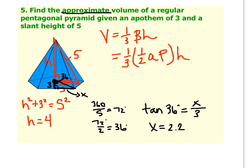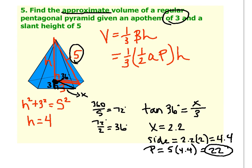Now if x is 2.2, I need to multiply that by two to get the side length. So 2.2 times 2 is 4.4. And the whole reason for doing this is we had to figure out the perimeter of the pentagon. So five sides times 4.4 is 22. So now I have the perimeter, I have the apothem of 3, and we have found the height, which is 4. Then we can finish the problem.